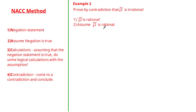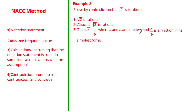Next, we assume the negation is true: we assume the square root of 2 is a rational number. If it's rational, it means √2 can be written as a fraction a/b where a and b are integers and a/b is in its simplest form. The idea of it being in simplest form may seem a little random, but any fraction can be written in its simplest form.